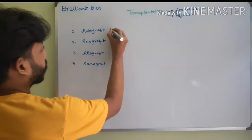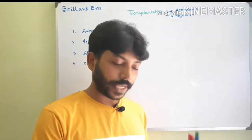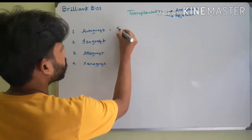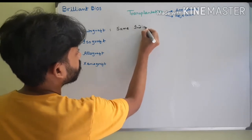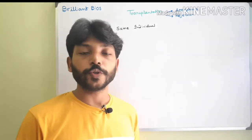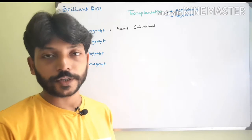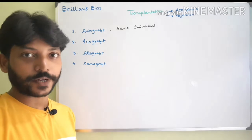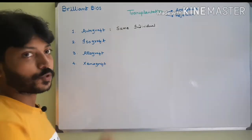The first is autograft, which means tissue is transferred from one side to another side of the same individual. For example, in a burn patient, skin can be transferred from a healthy side to the burnt side. This is autograft — same individual tissue transfer — where the donor and recipient are the same.